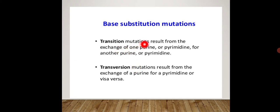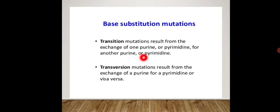Transition mutations result from the exchange of one purine for another purine, or one pyrimidine for another pyrimidine. So a purine is replaced by a different purine, and a pyrimidine is replaced by a different pyrimidine. Since purines are A and G, in transition A can replace G or G can replace A; and among pyrimidines, C can replace T or T can replace C.